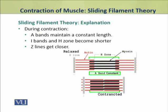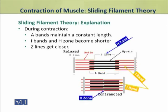The A-band maintains its length and does not move — its length remains constant. However, during contraction the I-band and H-zone become shorter because the thin filaments slide past into the A-band region. The I-band is the zone containing only thin filaments, and the H-zone is the region containing only myosin fibers.